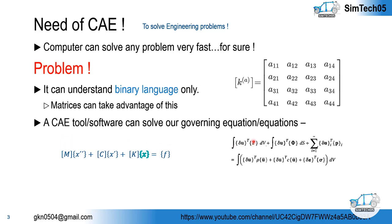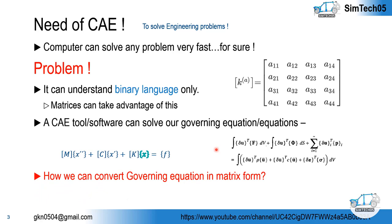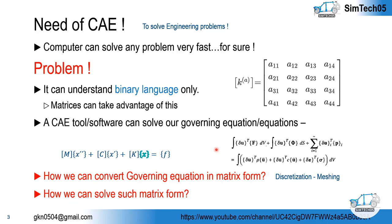But these equations do not look the same in numerical techniques — in numerical methods, these equations look different; it is actually an expansion of that compact form. So there are two major questions. If we have an engineering problem and want to solve it with the help of a computer, we have to convert that problem into matrix form. How? The answer is with the help of discretization, or in other words, by meshing.